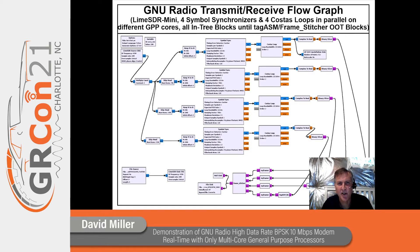This chart depicts the GNU Radio flow graph I used for this project. The flow graph has four chunk chains in parallel. Each chunk chain has its own symbol synchronizer block and Costas loop block. Before the symbol synchronizer blocks are the skip head blocks and the keep M-in-N blocks, used to break the incoming stream into four slower-rate overlapping streams. At the bottom of the flow graph are the out-of-tree modules I used: the frame stitcher block and the tag ASM blocks. The modulator blocks are shown in the lower left corner.